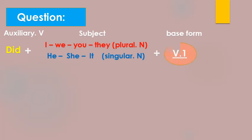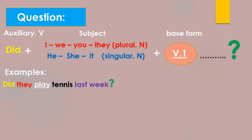Here we have examples: Did they play tennis last week? So the answer is yes or no. Yes they did, or no they didn't.